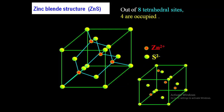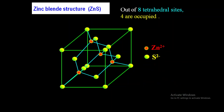One important point: the coordination number is 4. Out of 8 tetrahedral sites, only 4 are occupied. There are only 4 Zn²⁺ ions, meaning 4 Zn²⁺ ions occupy tetrahedral positions — each is coordinated by 4 sulfur ions. All 4 Zn²⁺ ions are tetrahedrally coordinated, occupying 4 tetrahedral sites. So 4 tetrahedral sites are empty. This zinc blende structure has 8 tetrahedral sites but only 4 are occupied and 4 are empty.